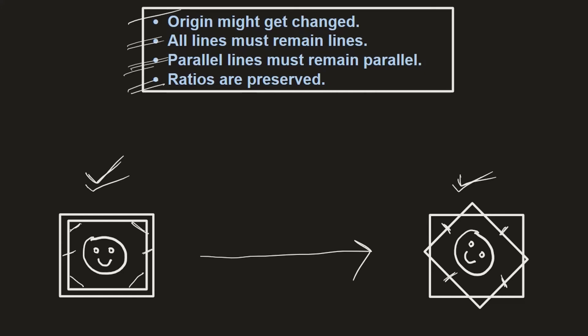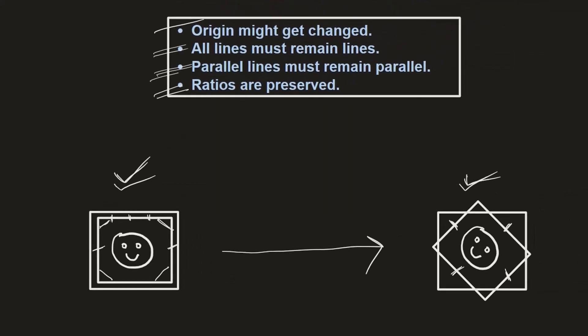The last condition is that ratios must be preserved. For example, take the top line of the photo frame and divide it into four parts. There is a ratio between those four segments. After applying the transformation, even if the length of the line changes, the ratio between those four parts must still be preserved. That covers affine transformation with a two-dimensional tensor or matrix.